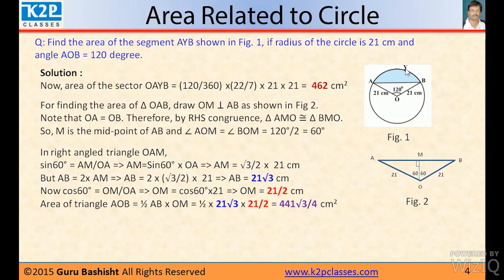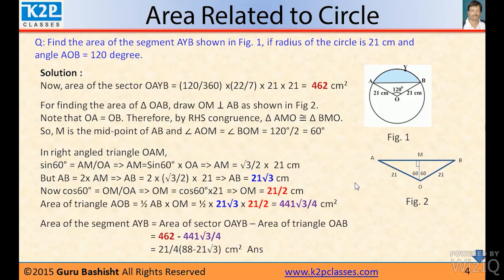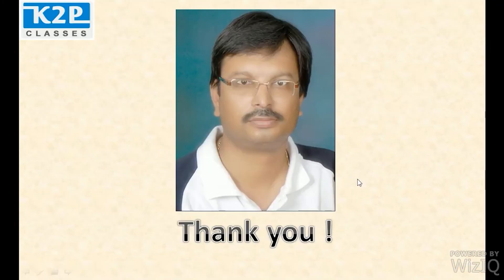Now the area of the whole sector, we have already found out is 462, this total. And the area of the triangle is 441√3/4. So here we complete this class.